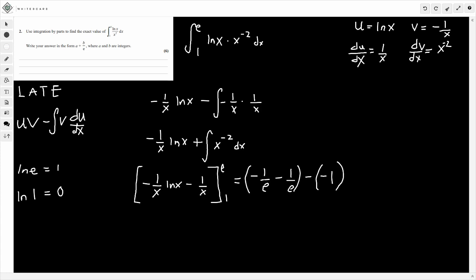If we carry out the simplifying here, this is minus 1 over e minus 1 over e. So that becomes minus 2 over e. And then, minus minus 1 is plus 1. And there we have it. We've found it in the form a plus b over e. So b is minus 2, or 2 if you're taking the minus out. And then a must be 1. And there we have it. That's the result of the integral for the 6 marks.